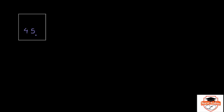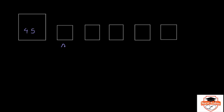Imagine you have a big box of injection syringes, and let's say there are 45 syringes in this box. There are 5 smaller boxes named A, B, C, D, and E. Your job is to put those 45 syringes from the big box into the 5 smaller boxes so that each of the boxes A, B, C, D, and E have the same number of syringes.